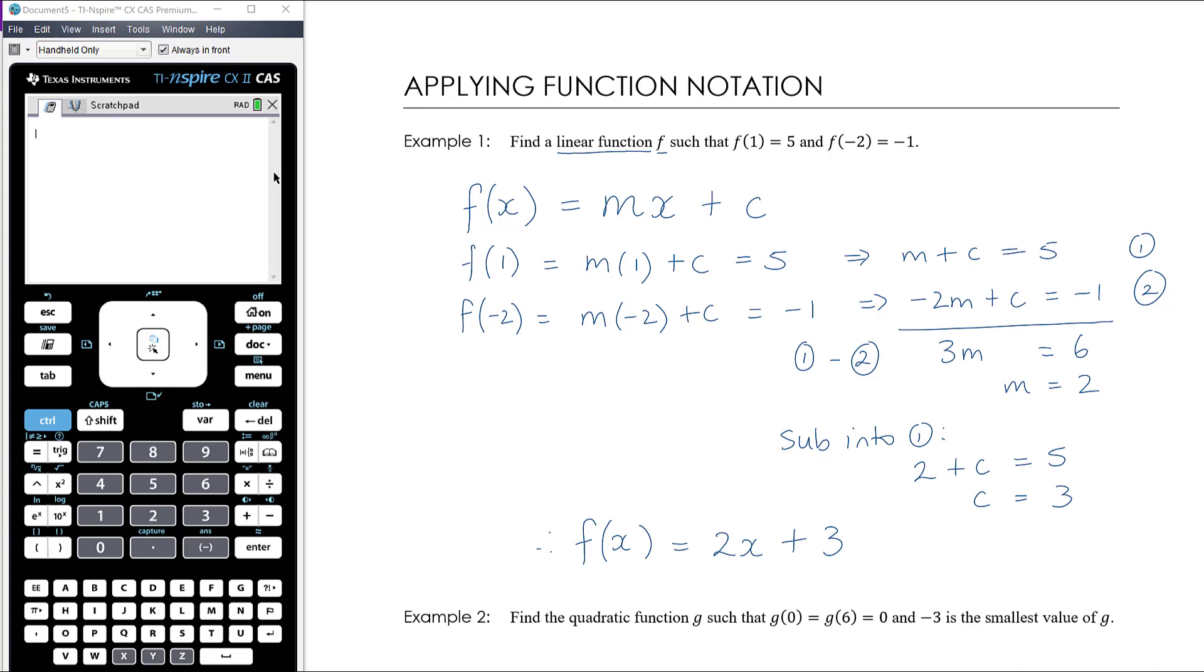So that is a function where f(1) equals 5 and f(-2) equals -1. Essentially what we've been given in these two bits of information is two points: when x equals 1, y equals 5, and when x equals -2, y equals -1. We've subbed those two points into our equations, come up with two simultaneous equations, solved to find m and c, and therefore been able to come up with the linear function.